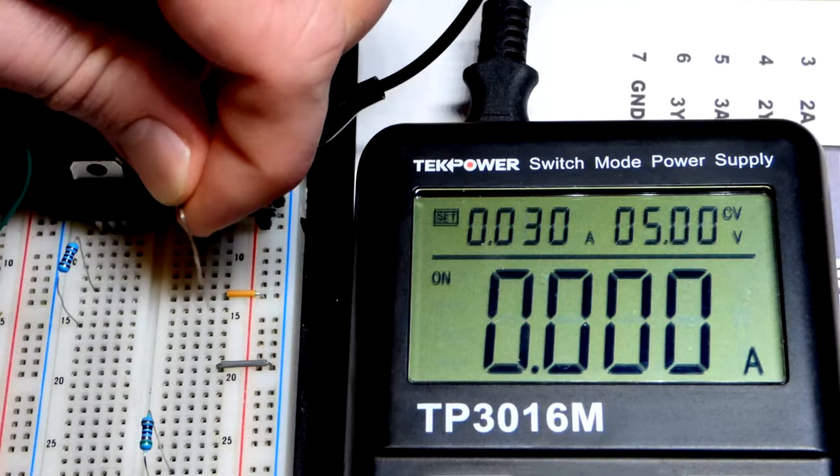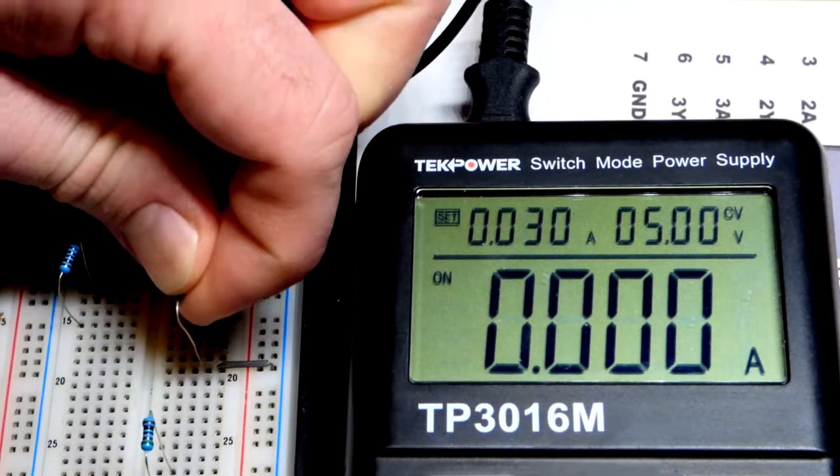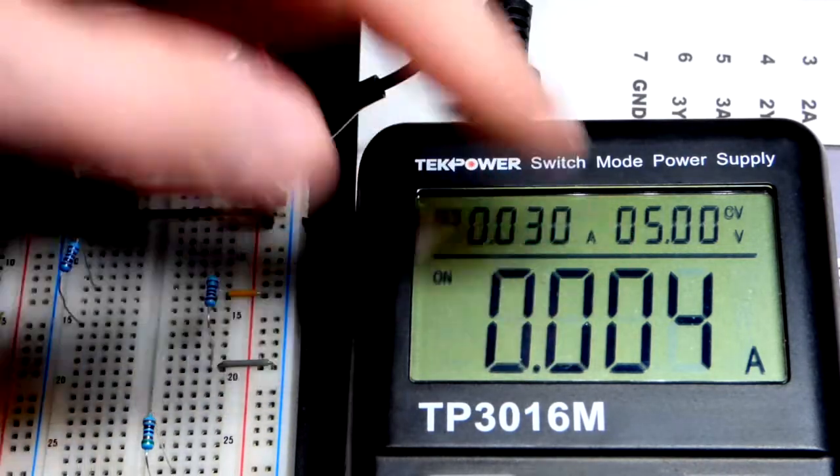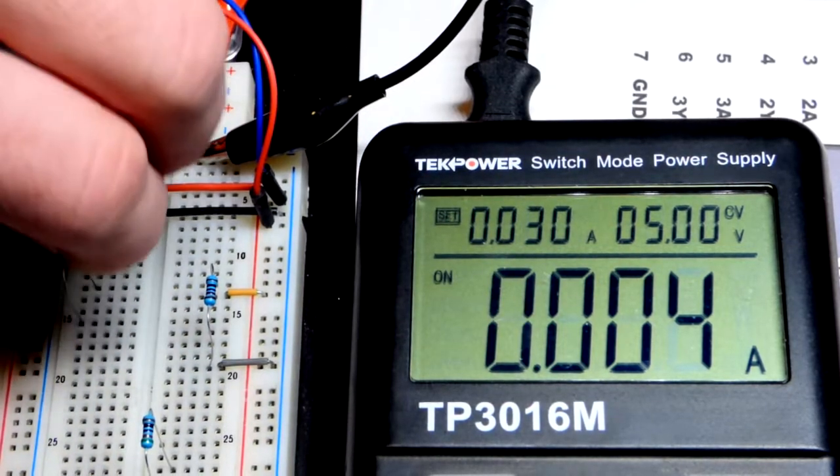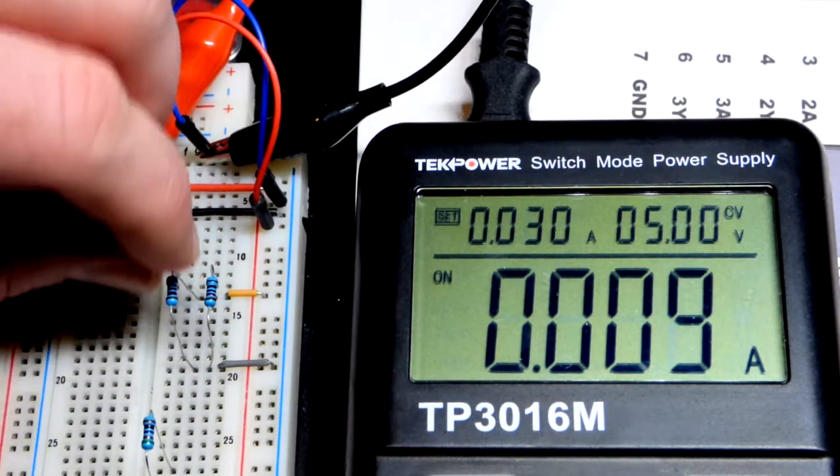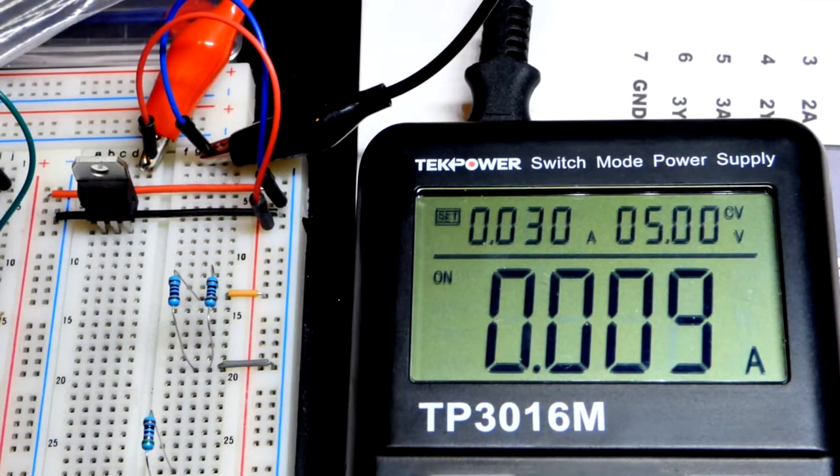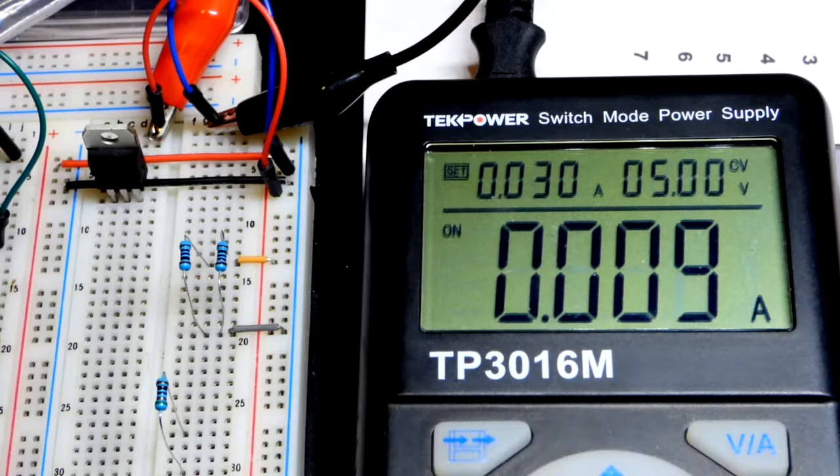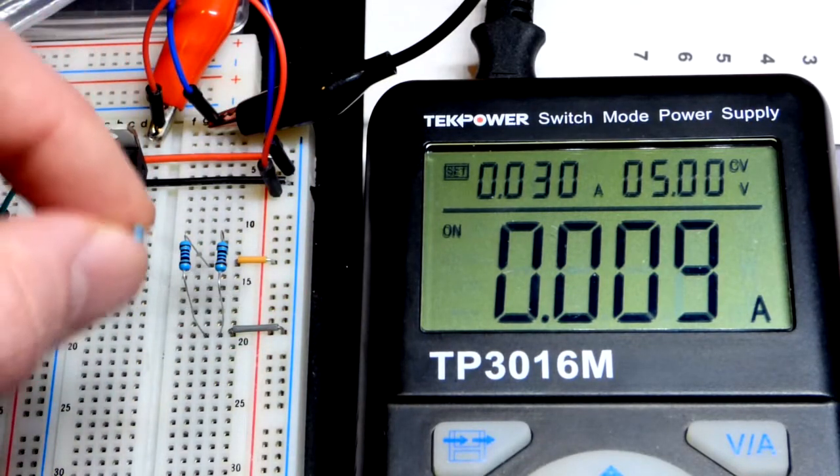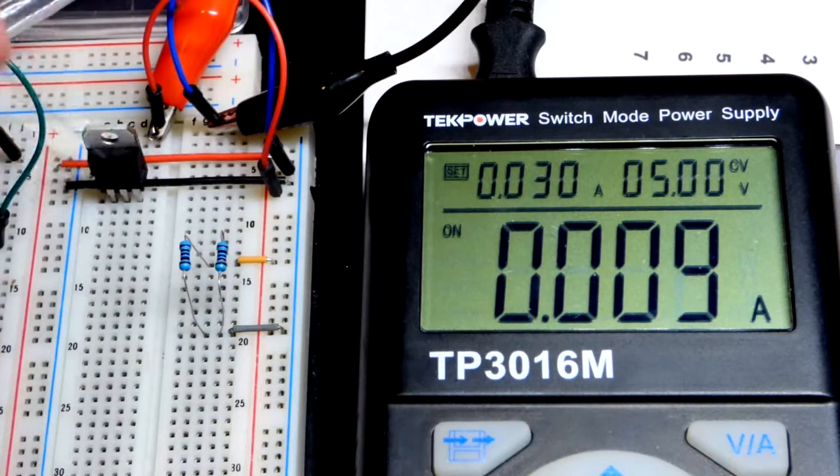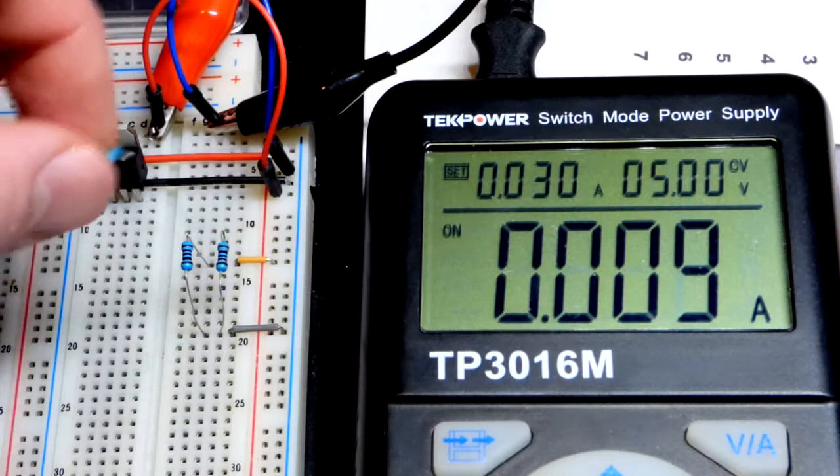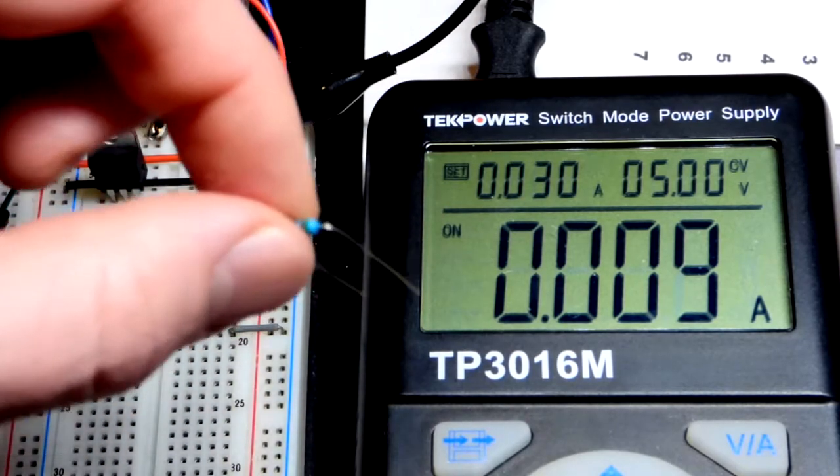Let's take the one kilo ohm resistor, put that from the jumper that goes to the positive rail to the jumper that goes to the negative rail. There you can see about five milliamps of current. When I add the next one in parallel with it, now you can see about 10 right there. Now, 500 ohm resistor, each one of those letting about five milliamps of current. If we add this third one, so five plus five, that's 10. We're going to add another 10.